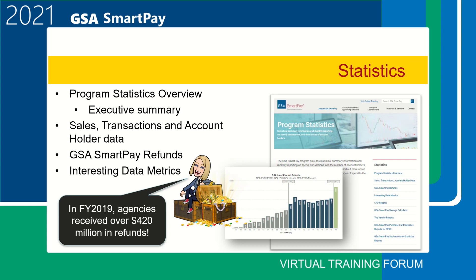There is an entire section on the website dedicated to program statistics, recently updated with new interactive graphs. The program statistics overview and executive summary is updated annually and contains information such as total spend, total refunds, and top agency spend. Monthly sales, transactions, and account holder data is updated on a spreadsheet each month. The GSA SmartPay refunds program illustrates net refunds since 1997 in an interactive graph, including SmartPay 1, 2, and now 3. In fiscal year 2020, agencies received over $403 million in refunds.